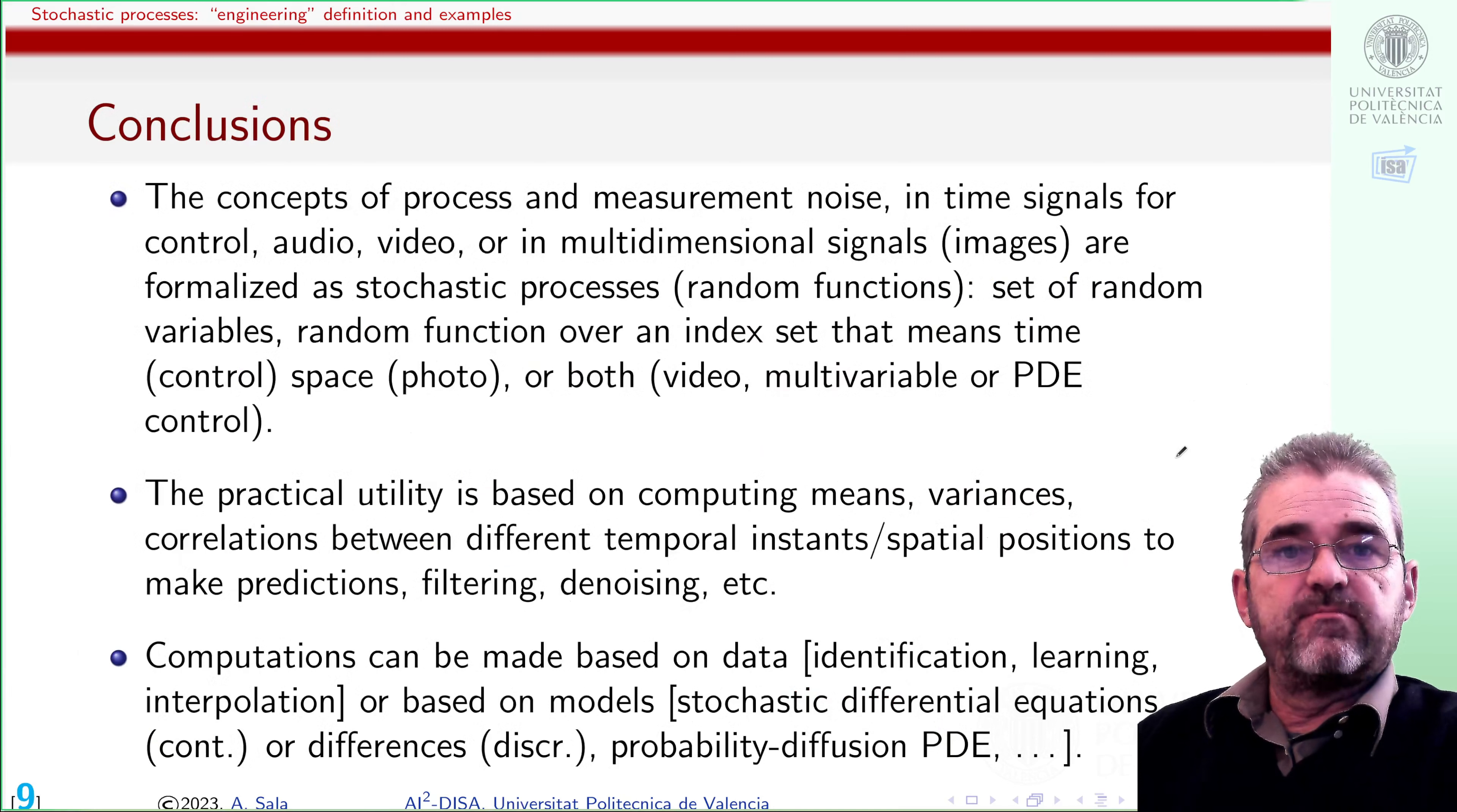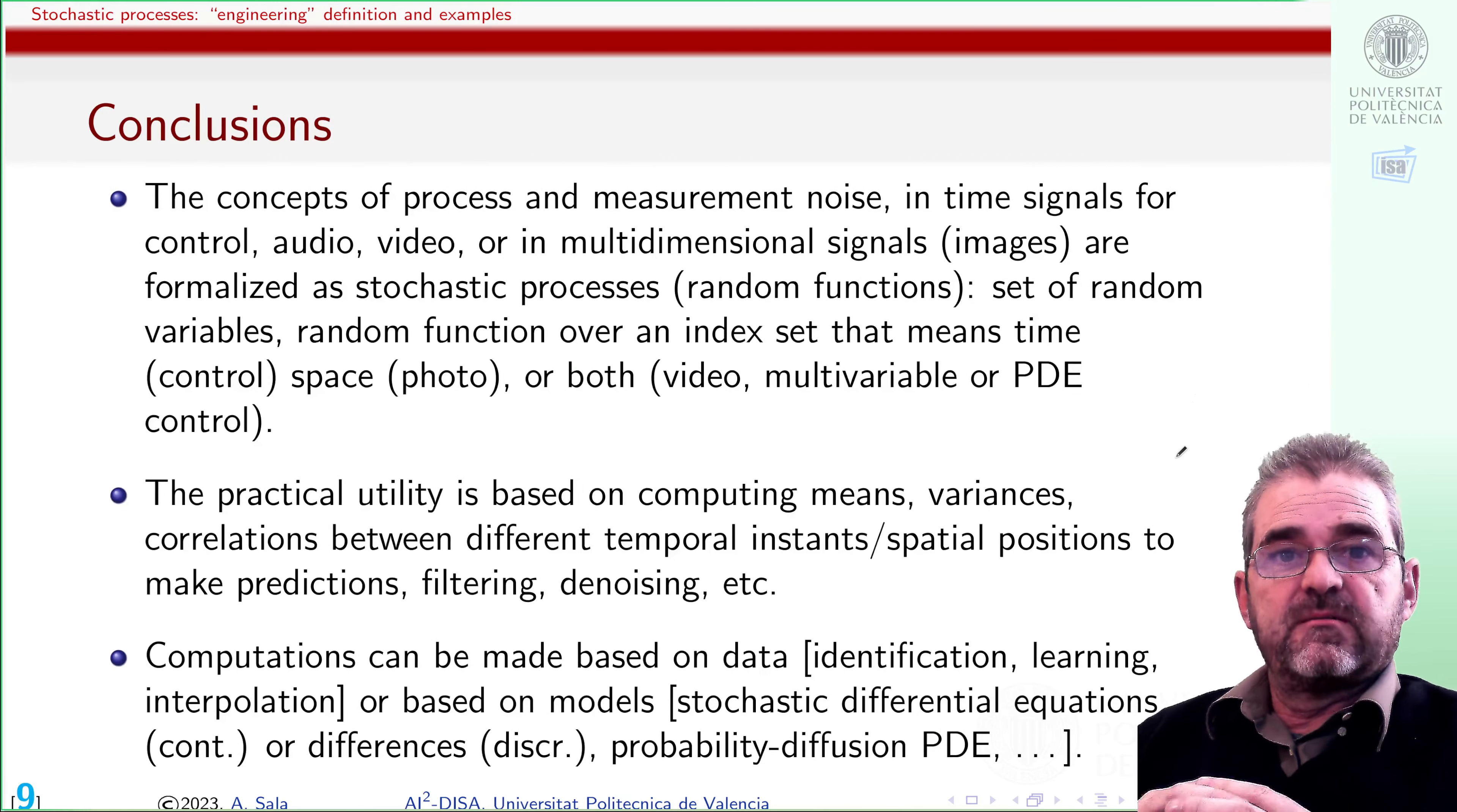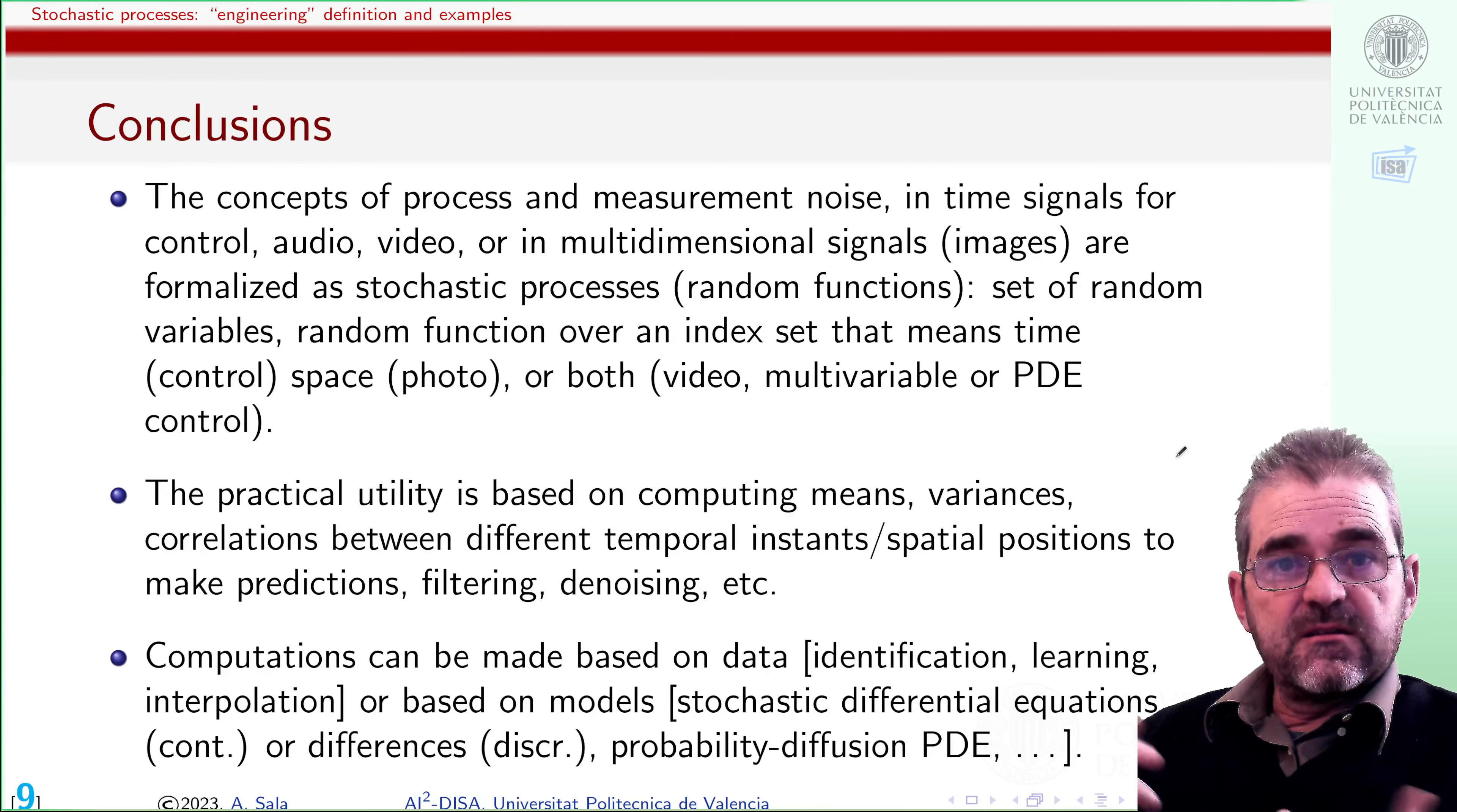So let us conclude. The concepts of measurement noise, process noise, fluttering vibrations, or noise in audio, video, in a film, well, they are formalized at stochastic processes, random functions. I have an index set, time, space, or whatever, and I have a random variable for each of the index set elements. The practical utility is being able to compute mean variances and correlations between things at different indices in order to make predictions, denoising, interpolation, and control.